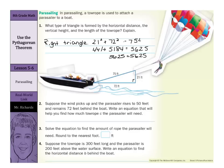Now, suppose the wind picks up and the parasailer rises to 50 feet and remains 72 feet behind the boat. Write an equation that will help you find how much tow rope C the parasailer will need. So, basically, we're still at a horizontal distance of 72 feet behind the boat. But now, we're up to 50 feet. And so, now we're looking for the length of the tow rope.